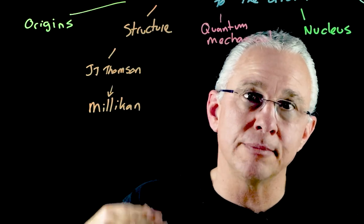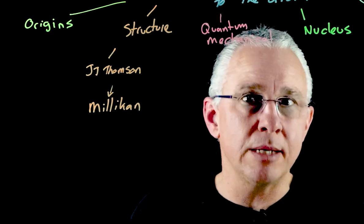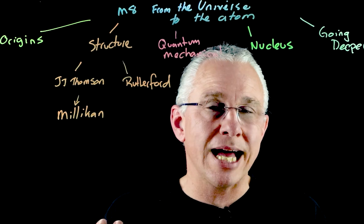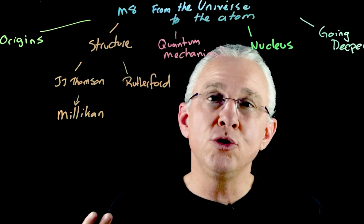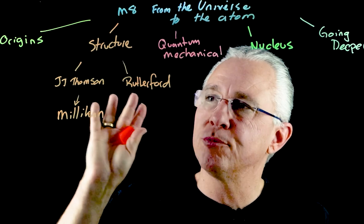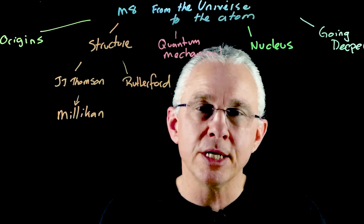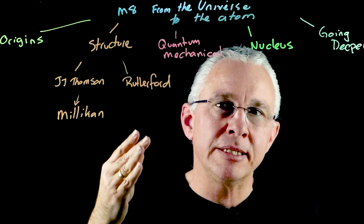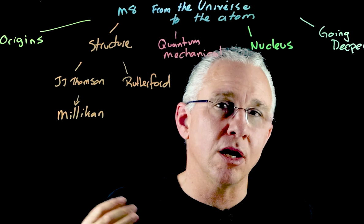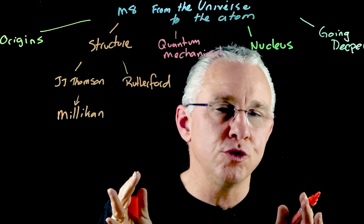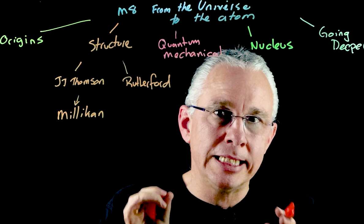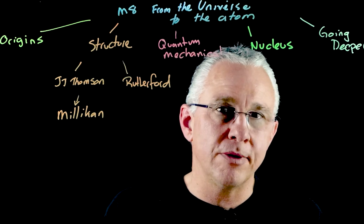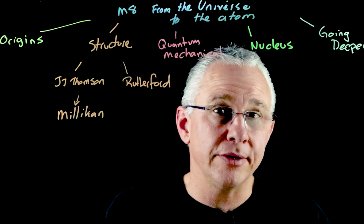These experimental techniques by JJ Thomson and Millikan led us to a deeper understanding of the structure of the atom, namely the discovery of the electron. We then move on to the work of Rutherford, who, by firing alpha particles at gold foil, developed a new model of the atom — away from JJ Thomson's plum pudding model to what we refer to as the planetary model. This experiment changed our understanding from a diffuse ball to the idea that an atom has a nucleus, with electrons existing in orbit around it.